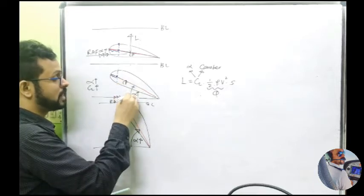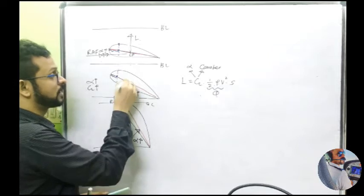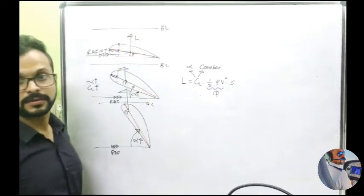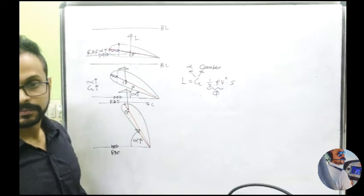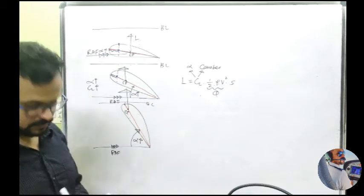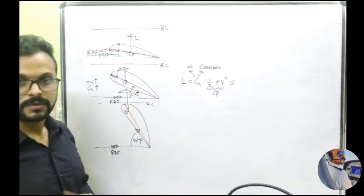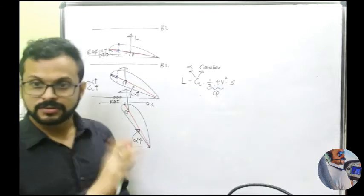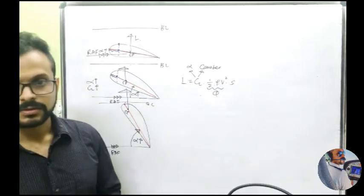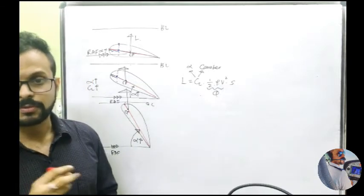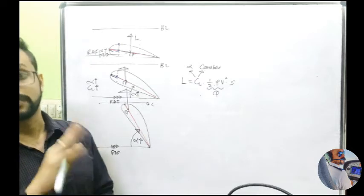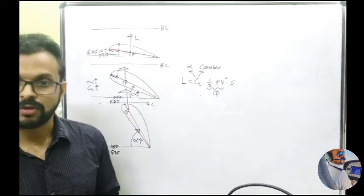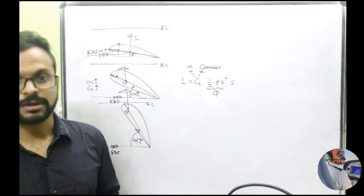CP moves forward, the lift will be very high, and this is the least. CP moves in the direction where the lift is maximum, and that maximum lift production point is actually moving further forward with increase in angle of attack. Therefore, CP is moving forward with increasing angle of attack.